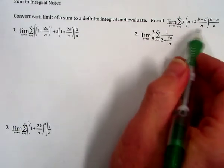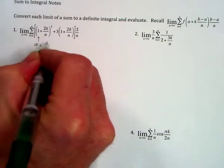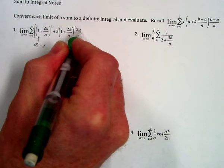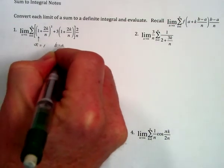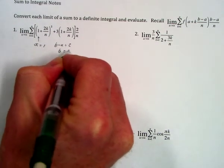When we compare this setup, we can see that a equals 1, and here we have 2k and a 2 here, so b minus a equals 2, therefore b equals 3.